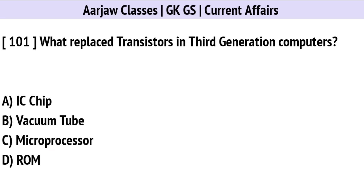What was used in third generation computers? The correct option is A: IC chip.